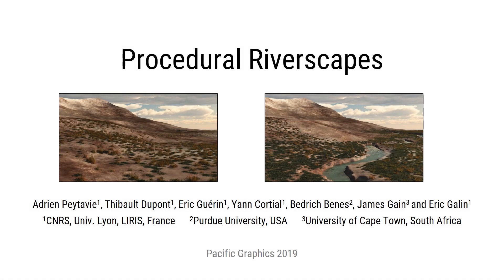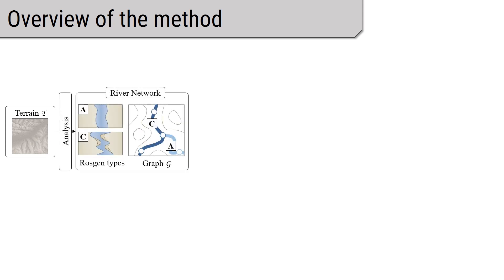We present a method for the procedural generation of riverscapes. This works by taking an input terrain with or without additional data and then generating a river network using derived drainage and slope maps.